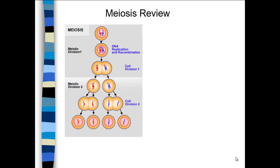Now let's talk about meiosis. You start with a zygote, which is 2N — it has two sets of chromosomes. Before cell division, you get DNA crossover. The red chromosomes originally came from mom, the blue from dad, so you can have individual chromosomes that are essentially hybrids between mom and dad. This enhances genetic variability. Even without crossover, meiosis followed by fertilization leads to a huge level of diversity.